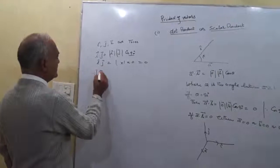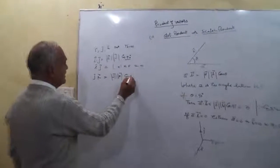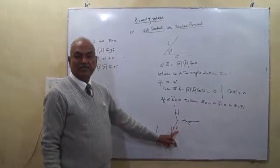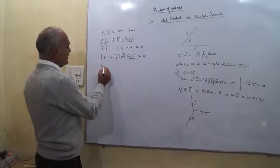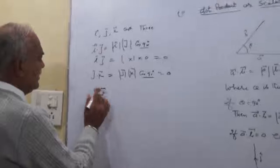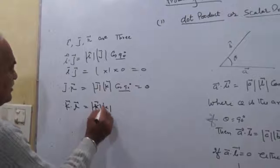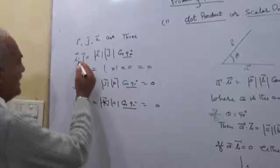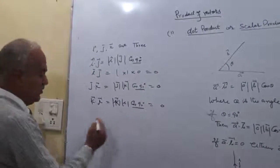Similarly, J dot K equals |J| times |K| times cos 90, because the J vector is inclined with the K vector at 90 degrees. This equals 0 due to cos 90 being 0. K dot J is also 0. K dot I equals |K| times |I| times cos 90, which is also 0. So: I dot J = 0, J dot K = 0, and K dot I = 0.